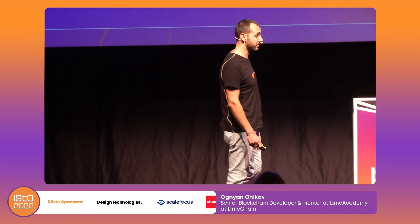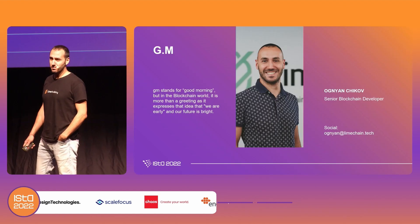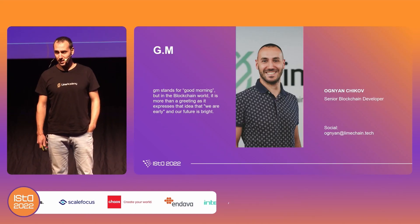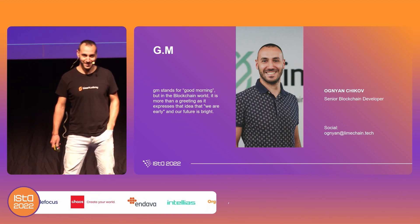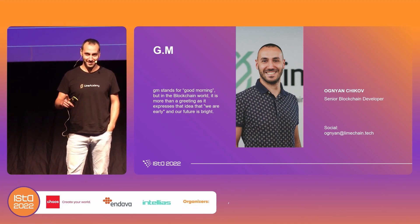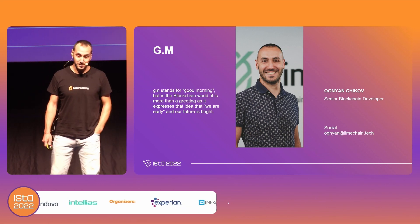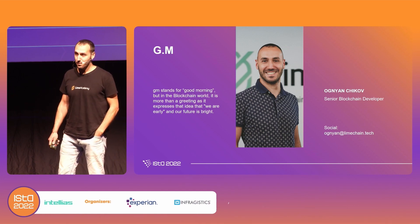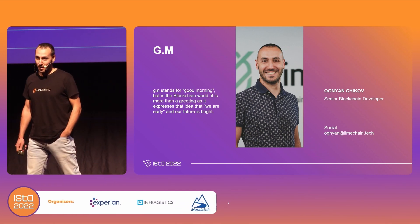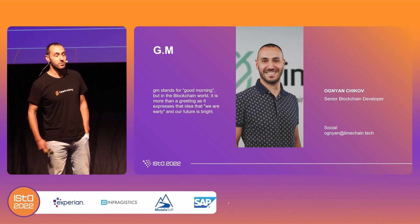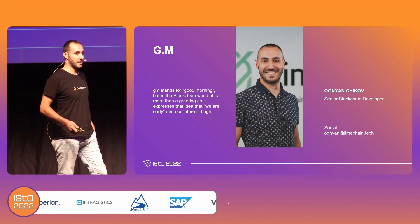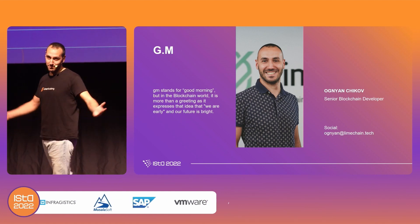I am so excited because today we are going to talk about instruments for smart contract testing and how we can test smart contracts. But before that, I just want to say GM — please raise your hands, those of you who know what GM stands for. GM stands for good morning, but in the crypto and blockchain world, it is more than a greeting because it expresses that we are still early and young in this technology, and our future is bright.